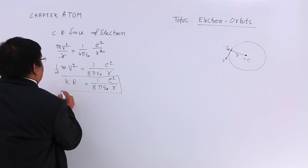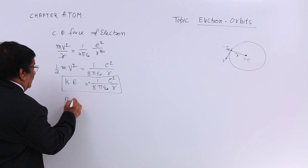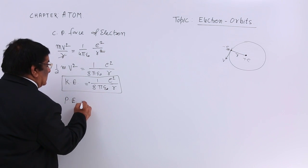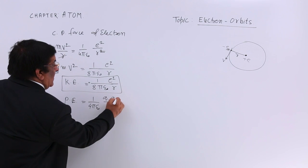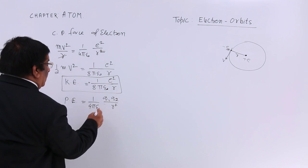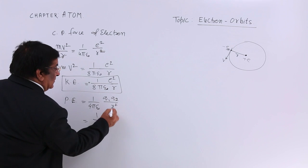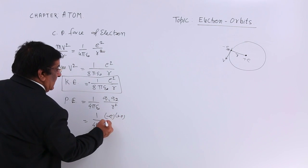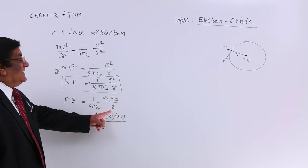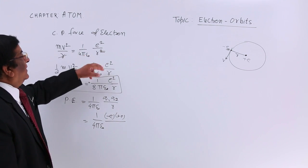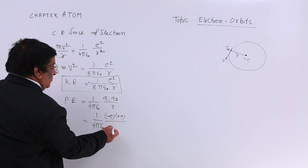The kinetic energy is positive, as kinetic energy is always positive. For potential energy, the formula is (1/4πε₀)(q₁q₂/r). Substituting q₁ = minus E and q₂ = plus E, we get potential energy = (1/4πε₀)(E²/r) with a negative sign, because it is minus into plus. Note there is no square on r in the potential energy formula — the r² appears in the force formula.